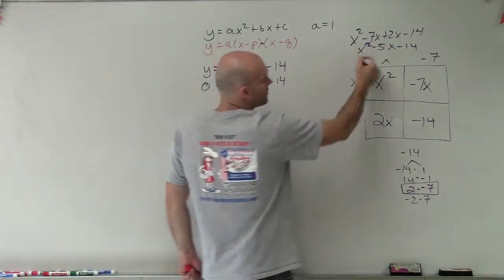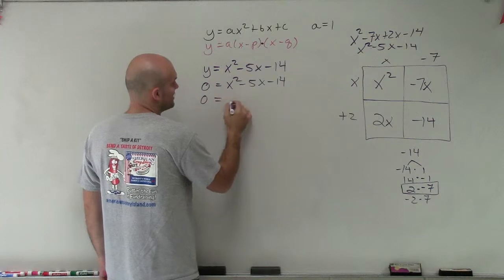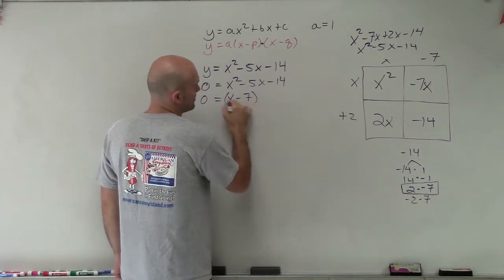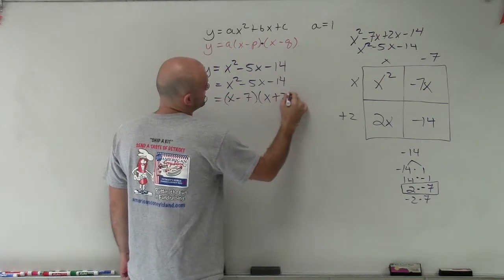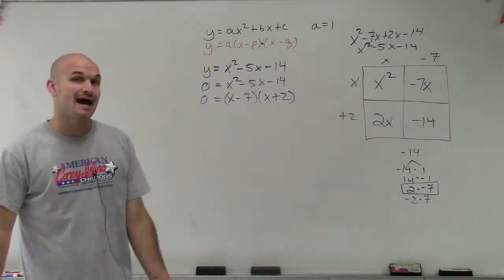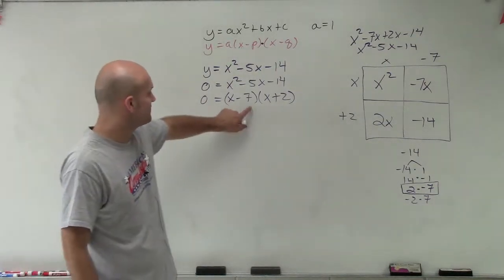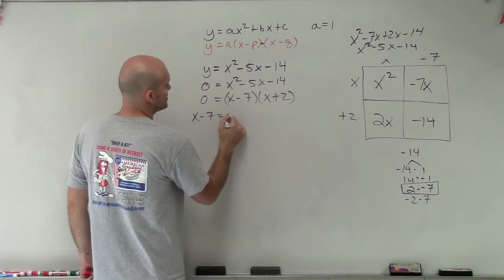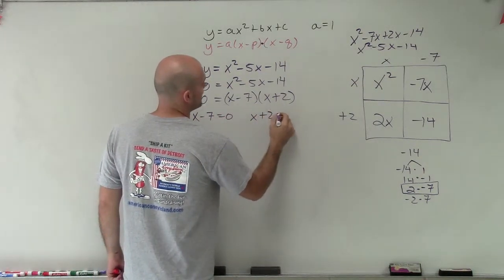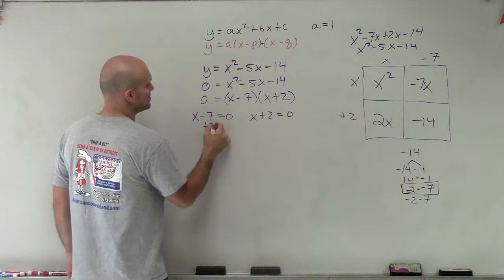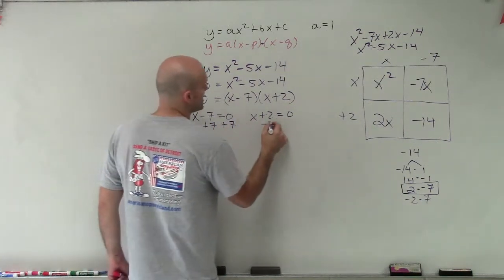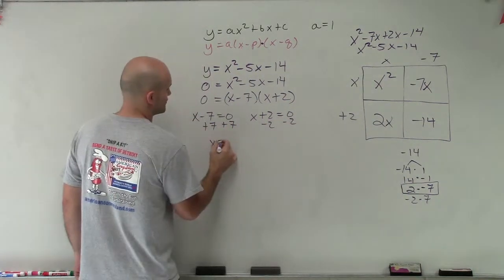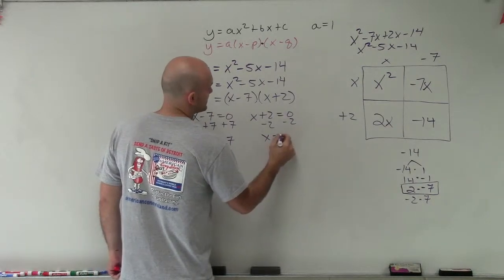This is now what's important, because now I can rewrite these as my two factors. x minus 7 times x plus 2. So now what I'm going to do is, since I have this times this equals 0, I know that one of them has to equal 0. So we set them both equal to 0. And now these are going to be my solutions as I use my inverse operations to solve x equals 7, x equals negative 2.